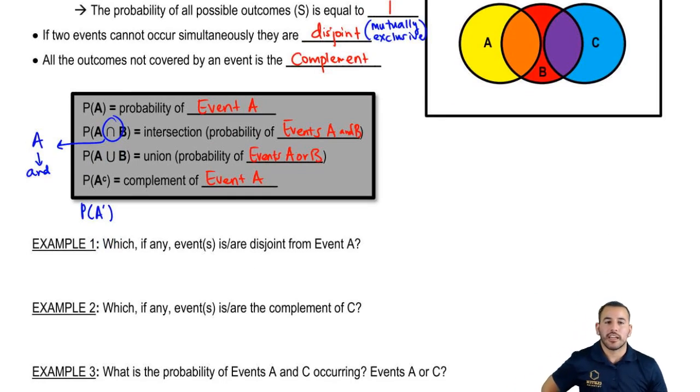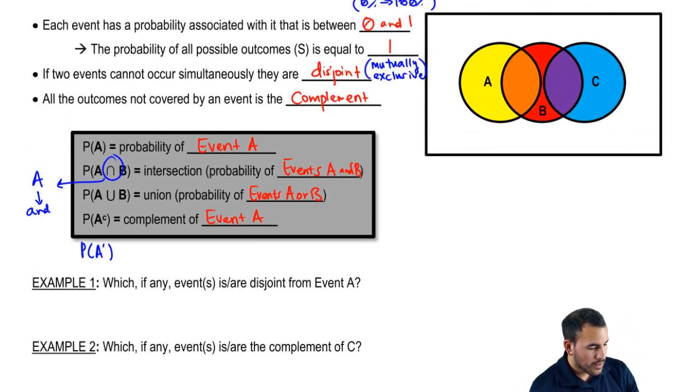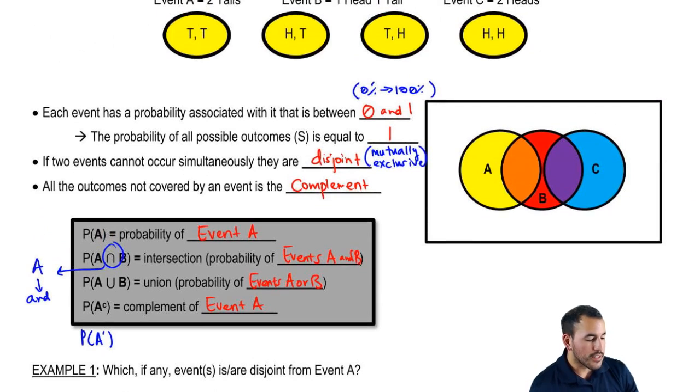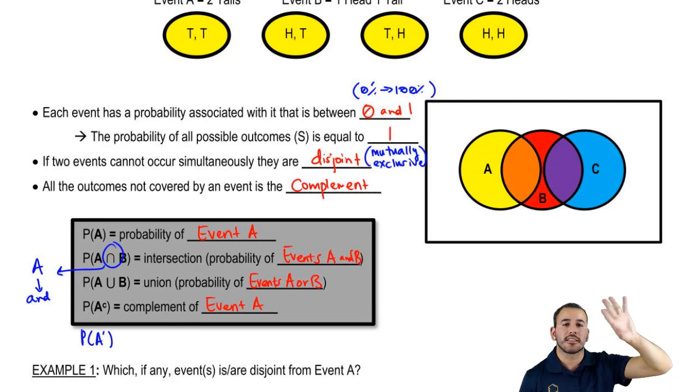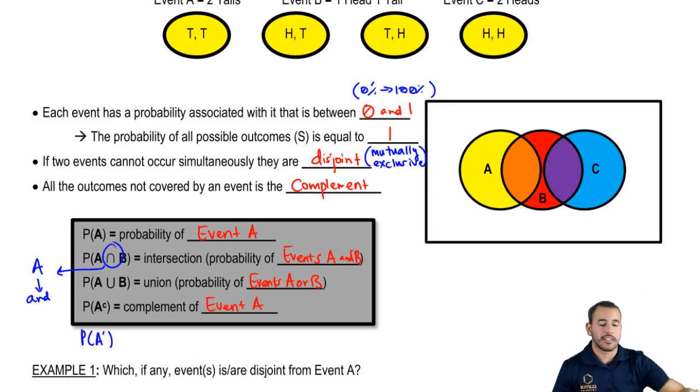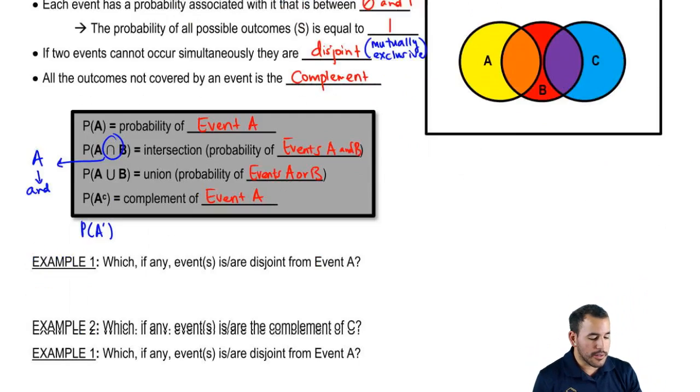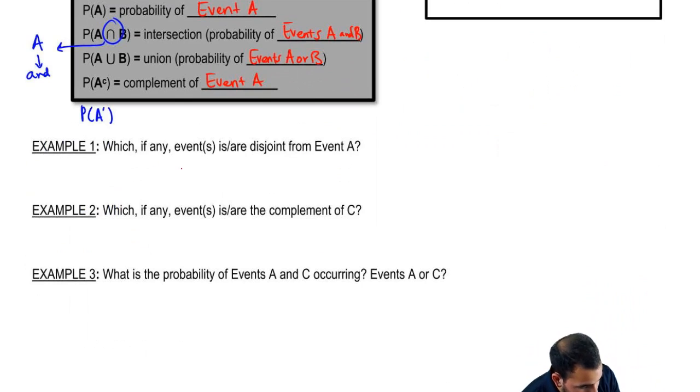So the ones that are disjoint from event A, it's basically just C because C is totally different, right? So A kind of has this tails, tails. B, there's a little tail in both of them, right? So B can happen sort of at the same time that A happens. And then we have C, which C is just totally different. It's heads, heads. So there is no kind of intersection between those two. So these are disjoint.